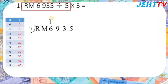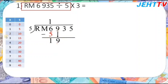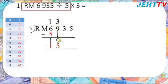Then 6 minus 5 equals 1, and we bring down the 9 to get 19. The number less than 19 in the 5 times table is 15, so 5 times 3 equals 15. Then 19 minus 15 equals 4.